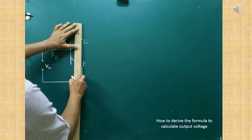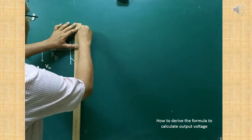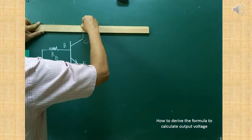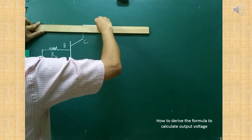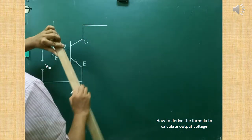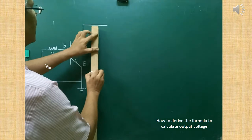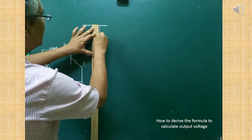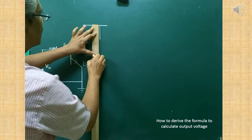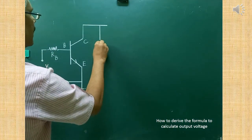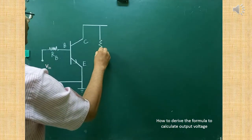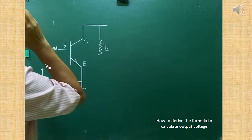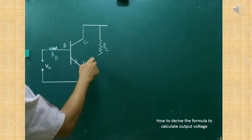From the collector, the circuit is extended. One resistance is to be connected in the collector. The name of the resistance connected in the collector is called RC — resistance connected in the collector is called RC.